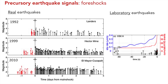Foreshocks are earthquakes that happen before the main shock — but they're only called foreshocks after the main shock, so it's hard to use them as prediction. Looking at three earthquakes in Southern California — including the El Mayor-Cucapah earthquake in 2010 and two 1990s events in the Eastern California Shear Zone — these plots show magnitude with time. The red ones are the foreshocks. Do you see any pattern? No. There are some earthquakes, but you can't tell if they're foreshocks, aftershocks, or just previous unrelated earthquakes.